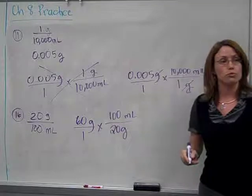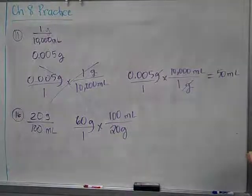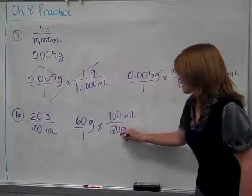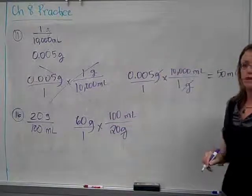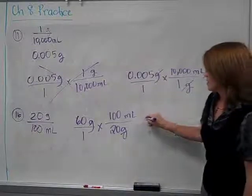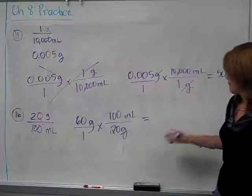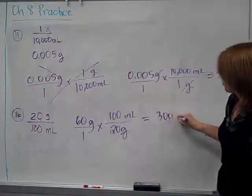That's the only way that this would work. Your grams will cancel out. How many milliliters would you be left with? 300. 60 times 100 divided by 20. 300 milliliters.